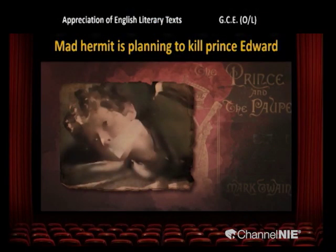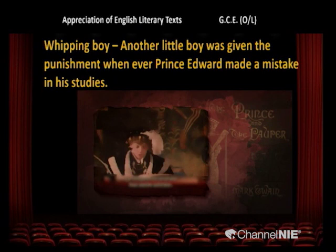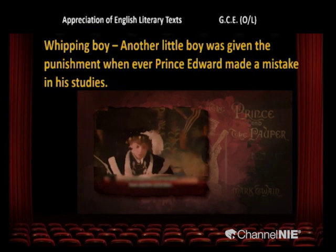Note the words 'mad hermit' — this madness is a motif you see throughout the novel. Next, the whipping boy — another historical event. It is said that in England certain kings had these types of whipping boys. What is the task of the whipping boy? Another little boy was given the punishment whenever Prince Edward made a mistake in his studies. Let's go to the video clip to see how the whipping boy gets the punishment.